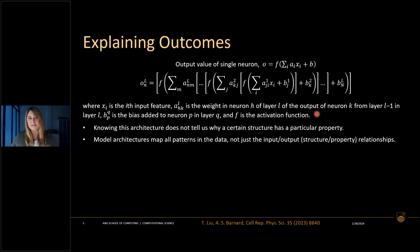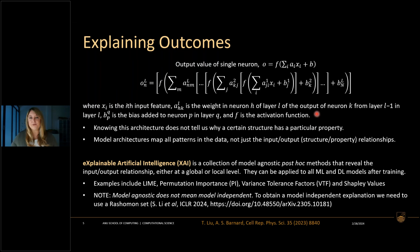A multi-layer perceptron will map all trends and patterns within the data, even those not directly related to a structure-property relationship. For example, in my own research on predictive biomarkers for ovarian cancer, a neural network often picks up patterns associated with batch effects or the time of day patients were tested — which has nothing to do with a cancer diagnosis. In these cases we need to turn to what's called explainable artificial intelligence, or XAI.